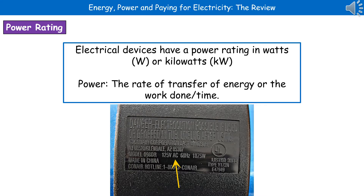If you've ever looked at any of your electrical devices that you've got kicking around the house, they will have a label or an imprint that tells you its power rating. All electrical devices have this power rating, and it will either be in watts with a capital W, or kilowatts — lowercase k, capital W.